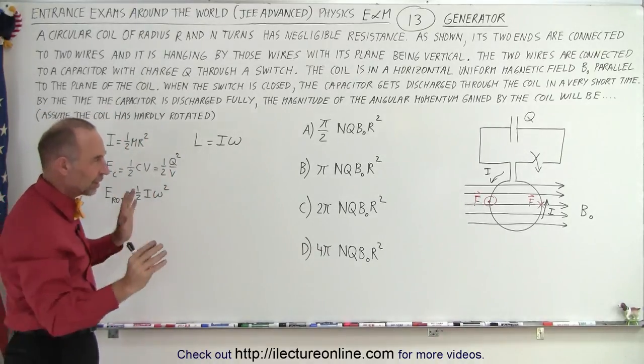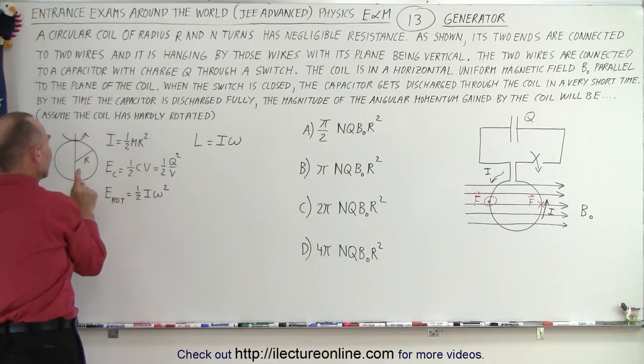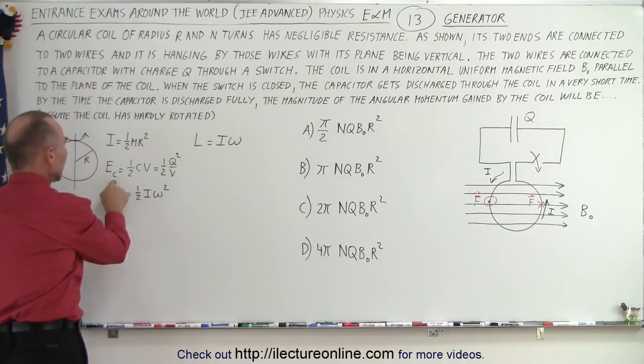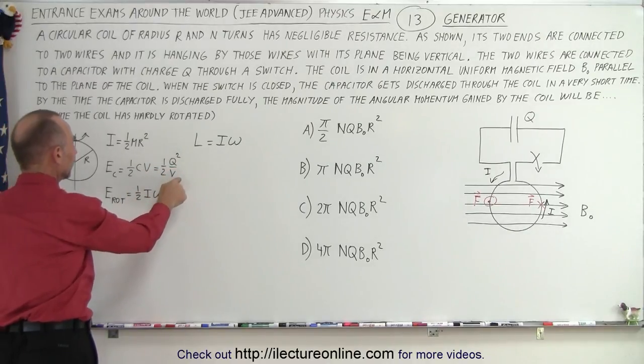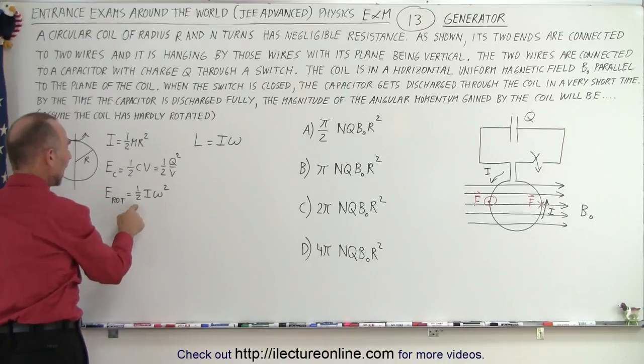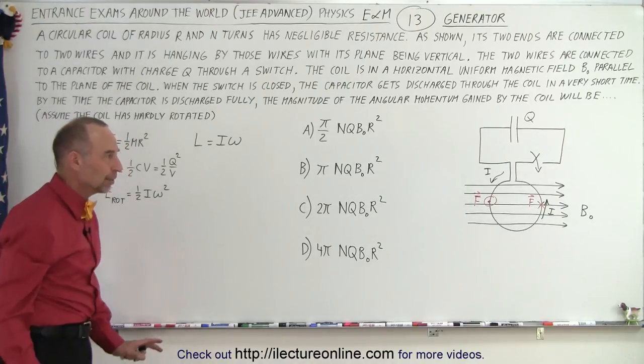What do I have on the board here? I started thinking about this. Notice that the moment of inertia of a circular object like this, with nothing on the inside like a wire, is going to be 1/2 mR². The energy contained in the capacitor will be 1/2 CV², which is 1/2 Q²/C. And the rotational energy of a rotating object will be 1/2 Iω².